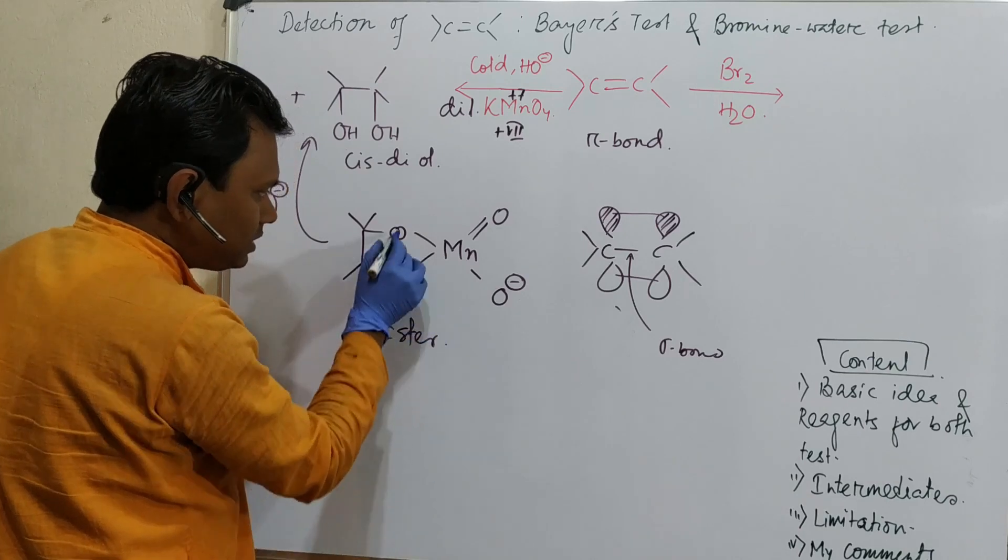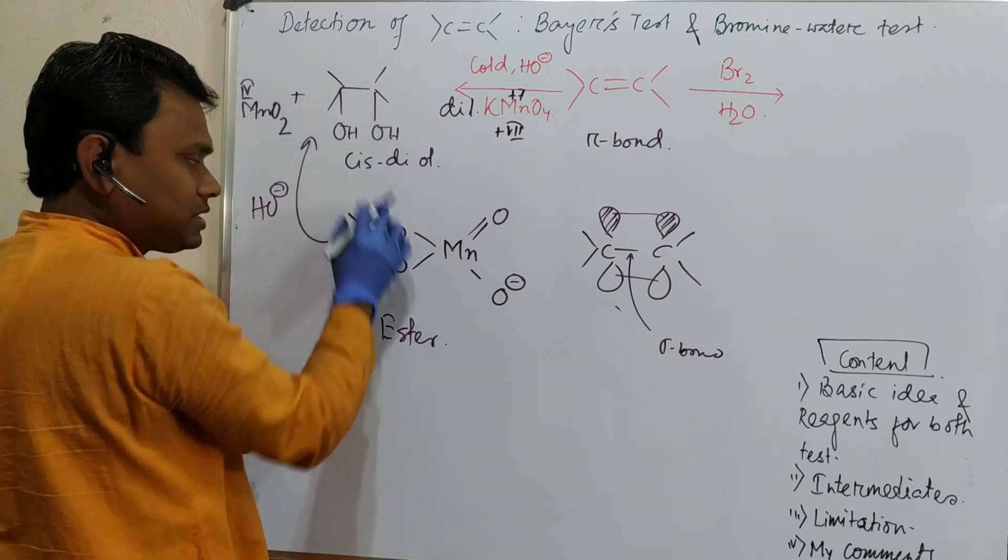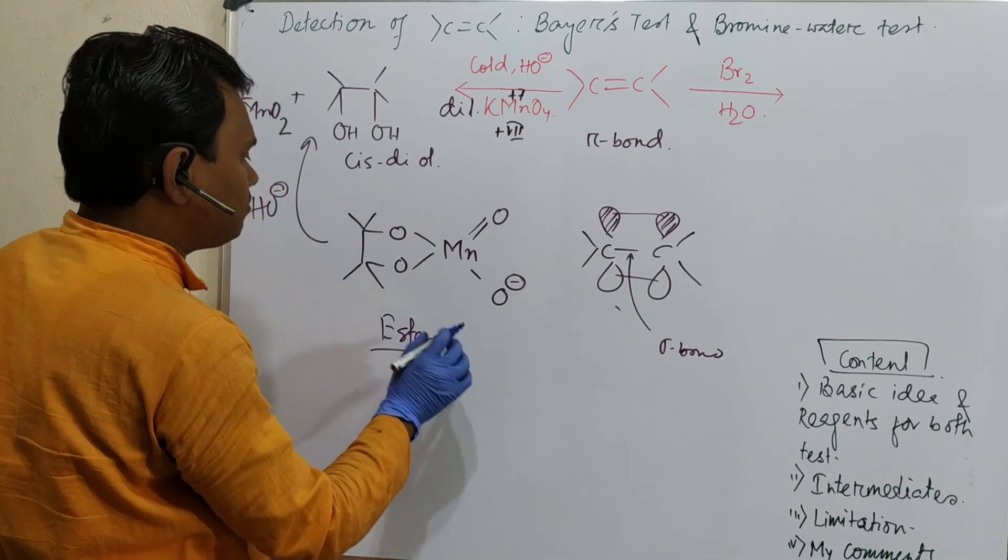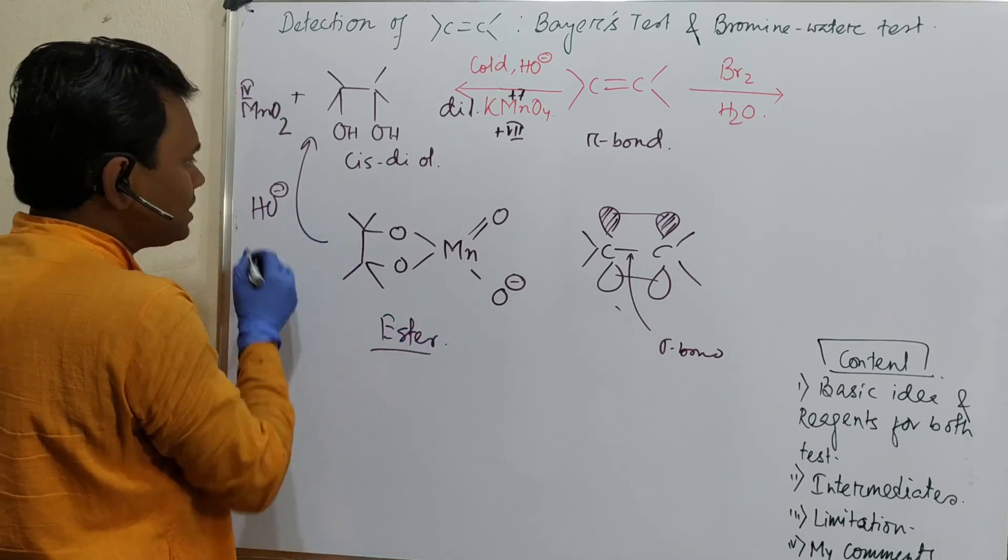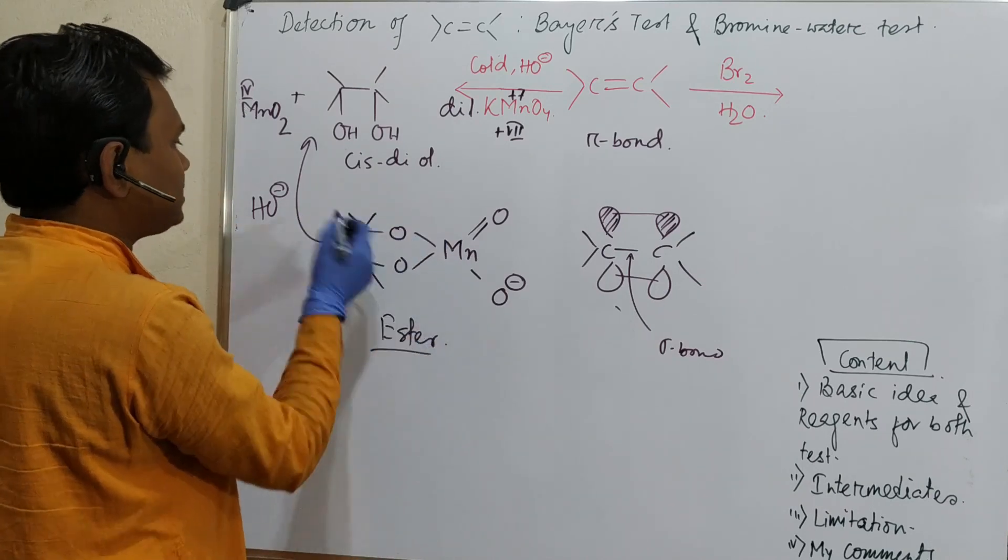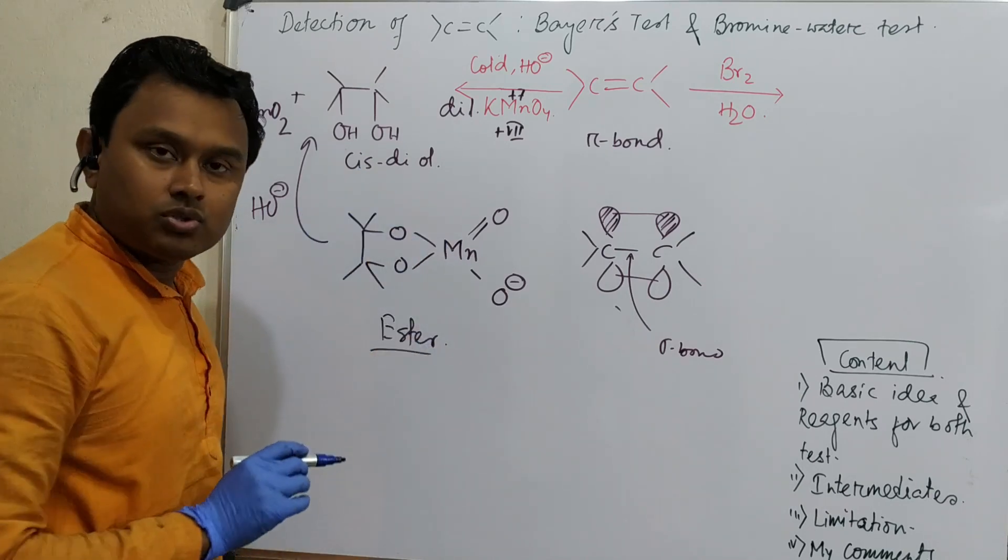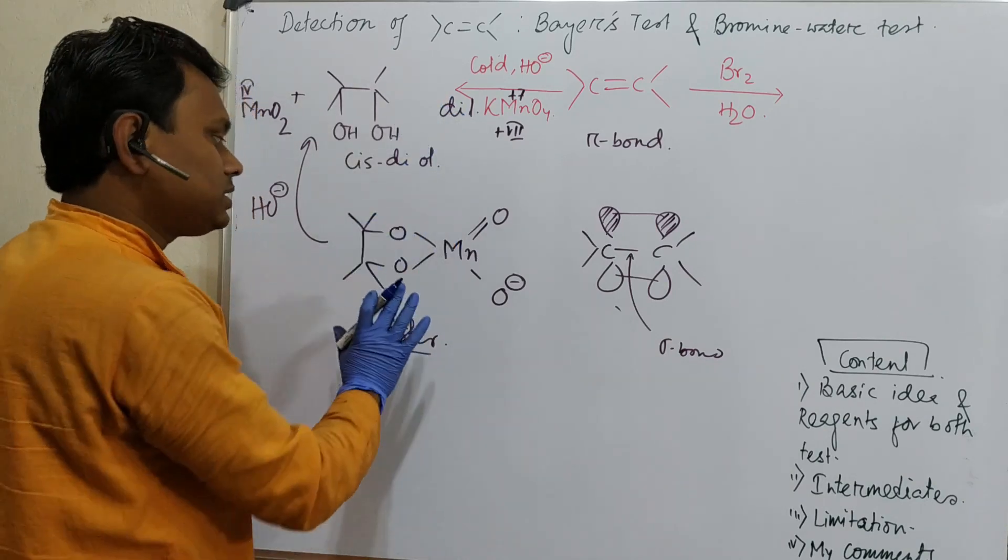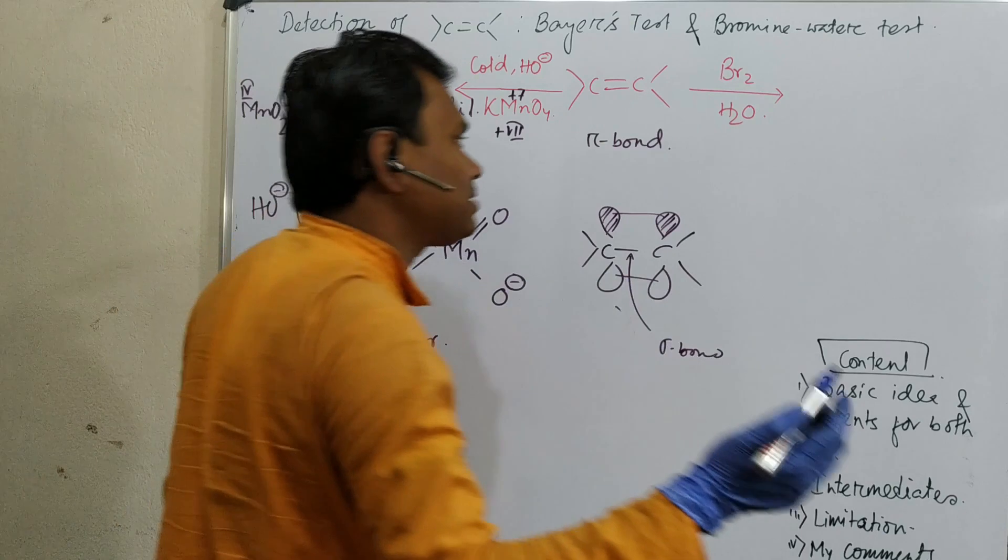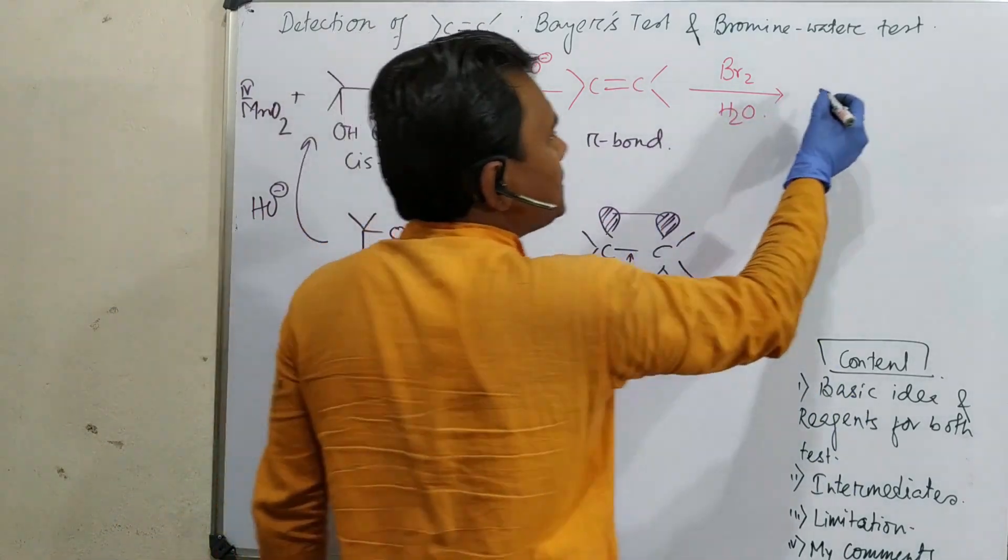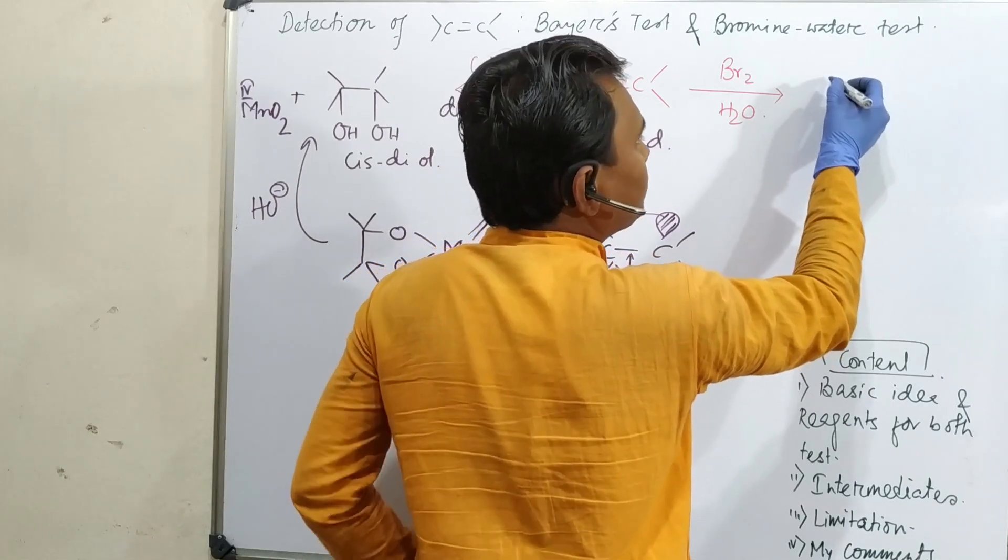It's an ester between this diol, which is an alcohol, and manganese. This is a metal-containing ester. Hydrolysis means it is hydrolyzed and produces cis-diol. So ultimately in this way cis-diol is produced. This is the simplest thing. Mechanism I will explain in the next video. In case of bromine water, what happened?